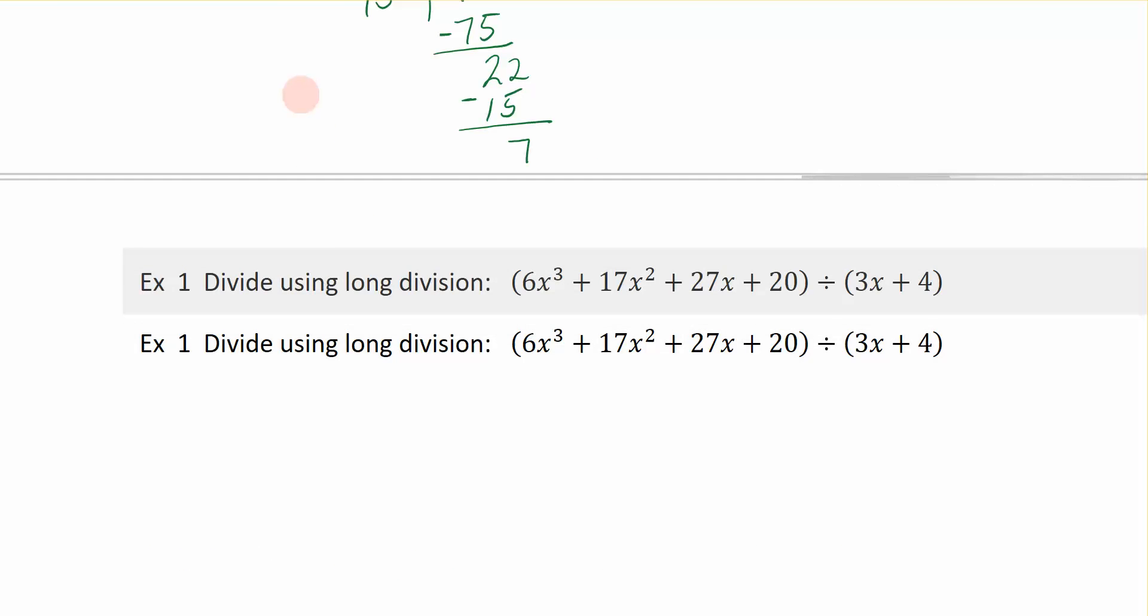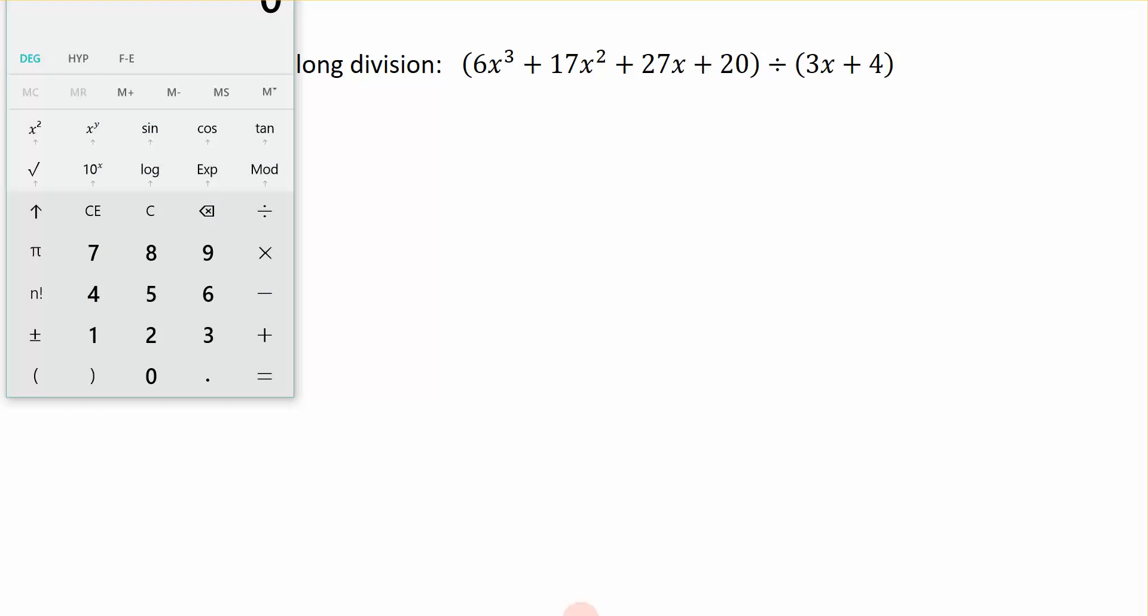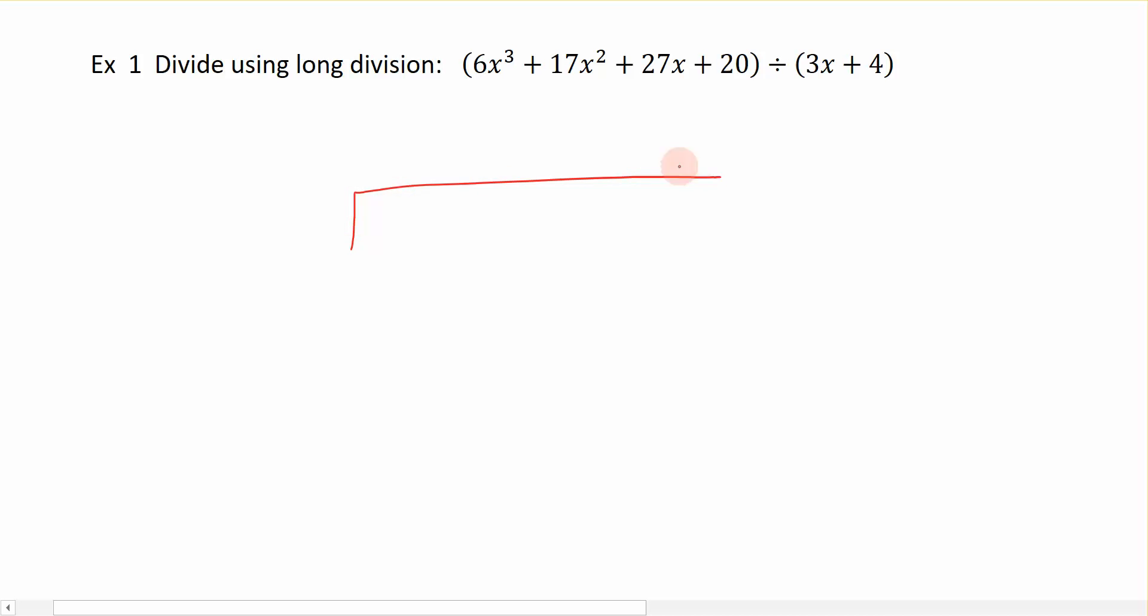We're going to apply that principle, only this time I'm going to use long division to divide this polynomial by this binomial. So this long polynomial is what goes under the house. It looks like 6x cubed plus 17x squared plus 27x plus 20, and I've got 3x plus 4. So it's this divided by this, so the 3x plus 4 goes on the outside.